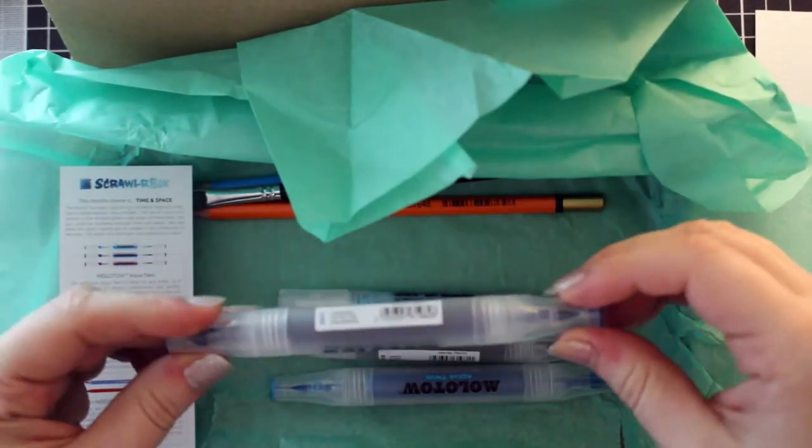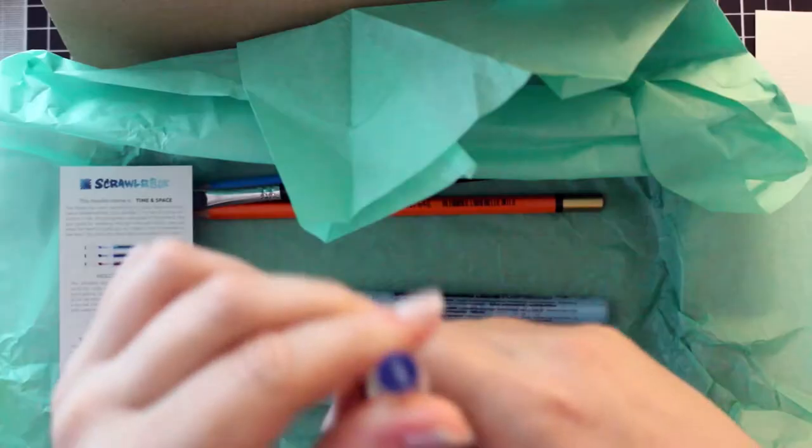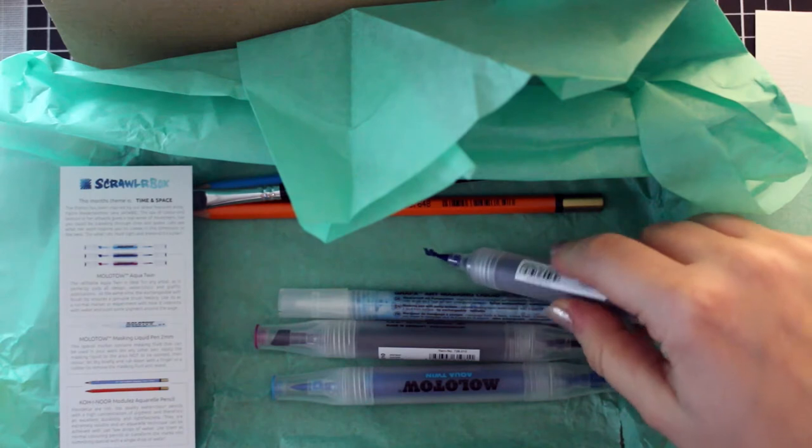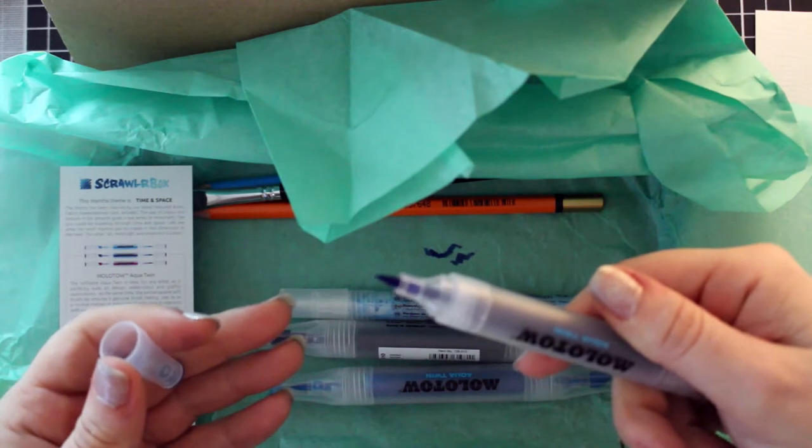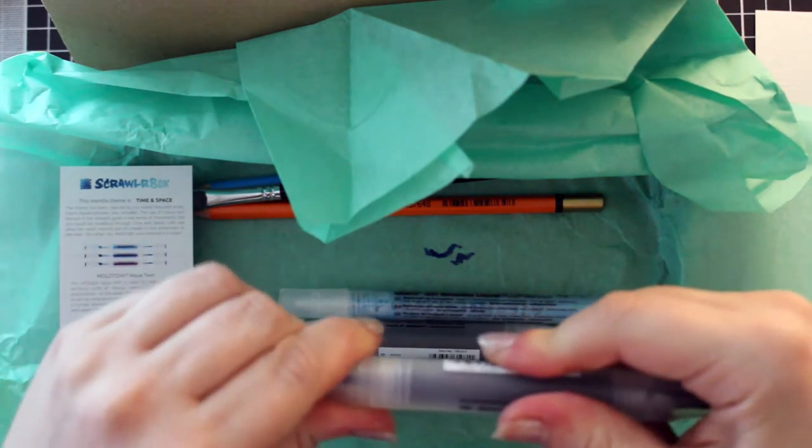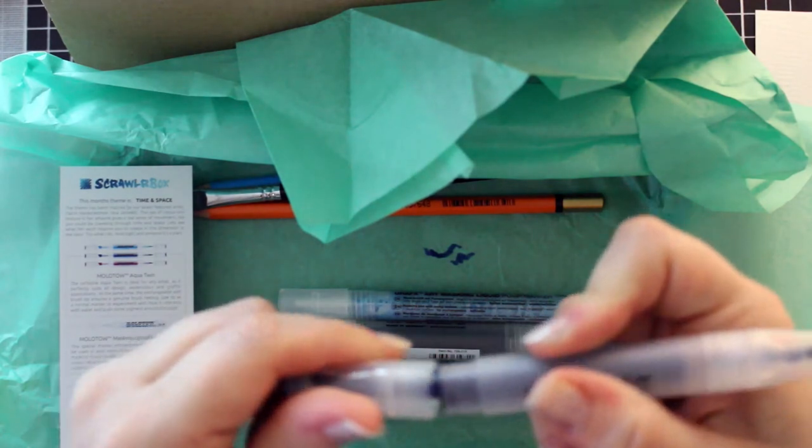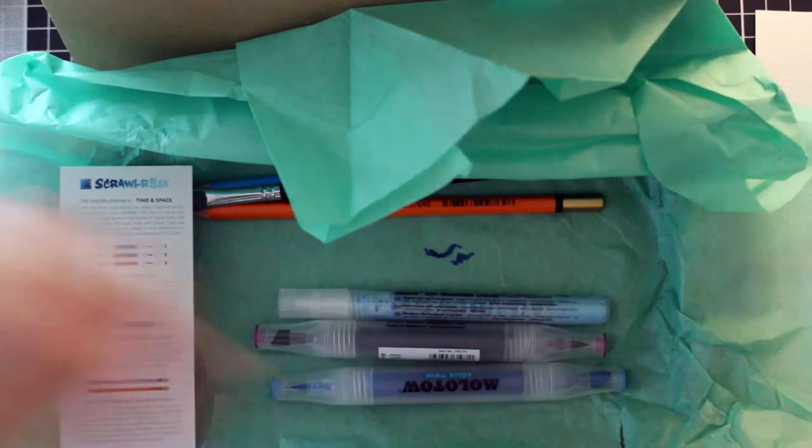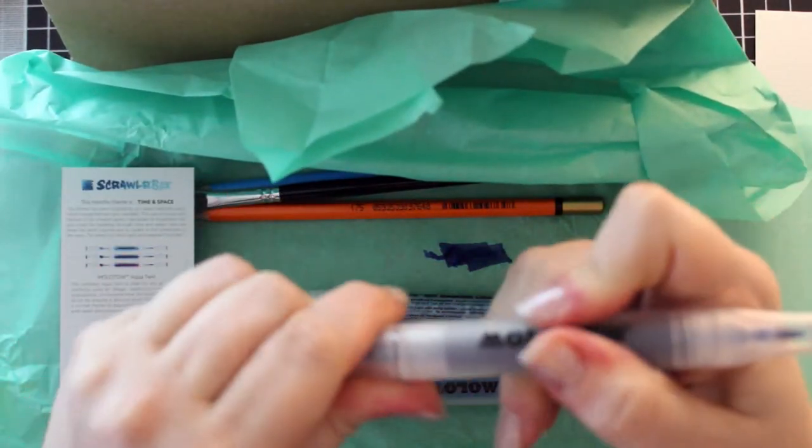I guess I'll just start with this one. The Molotow Aqua Twin. I guess it's some kind of pen and it's in 011. Okay, so we've got kind of a in between a brush nib and a bullet nib on one end. And wait, twist. No, don't twist it. That pulls it out. Pull. There we go. Chisel nib. Okay, cool. So that's in blue. TARDIS blue, I'd say.